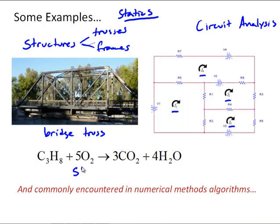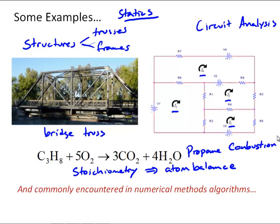Chemical reaction stoichiometry. When we do an atom balance, we get a linear system of equations. And looking at this equation, this is the combustion of propane. And you could probably balance this equation by inspection. But when we get into more complex chemical reactions, especially in organic chemistry, we end up with cases where we actually do need to set up a linear system of equations and solve it.